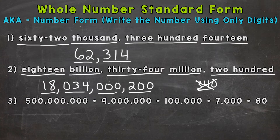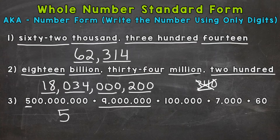Lastly, number three, where we have expanded form. We need to start with this five, which has a value of 500 million. We write this five, and we know it has to have a value of 500 million, so that's the 100 millions place. The next place to the right is the 10 millions place. We look at the nine, which is going to be in the millions place — so we don't have anything in the 10 millions. In expanded form, everything is in order, so we go left to right. Our next place is the millions, which is this nine. So nine in the millions.